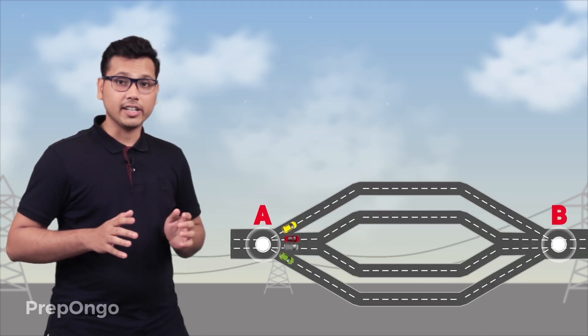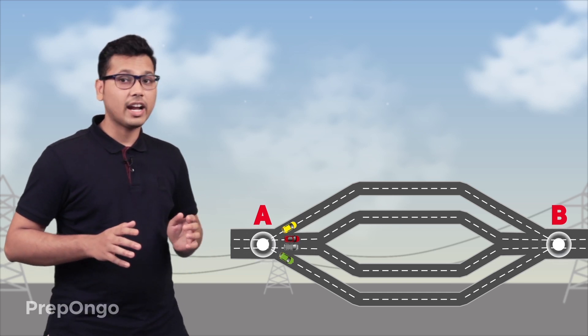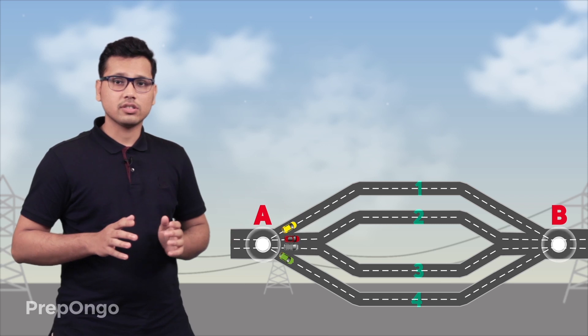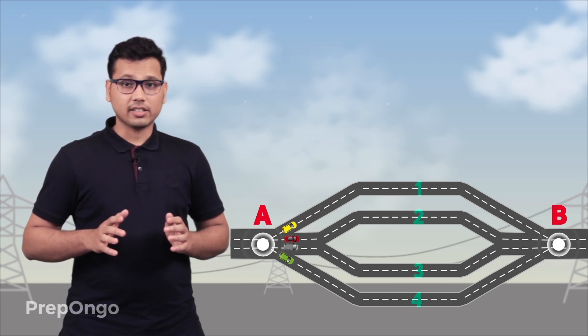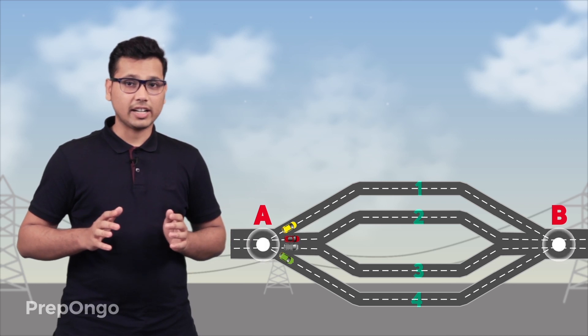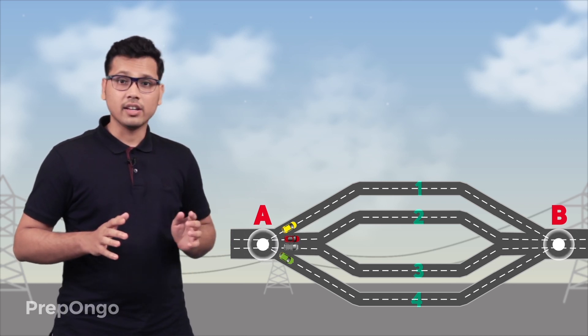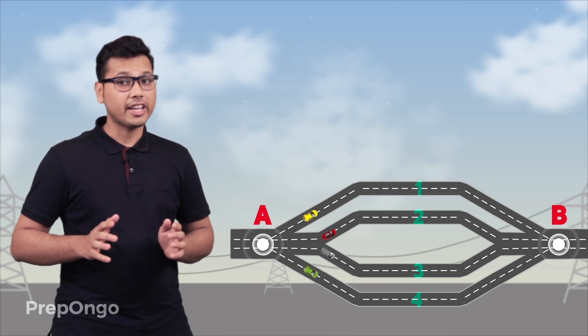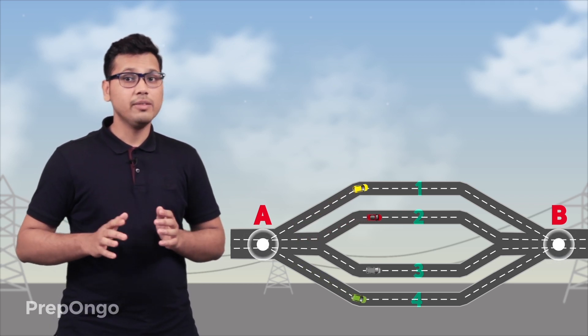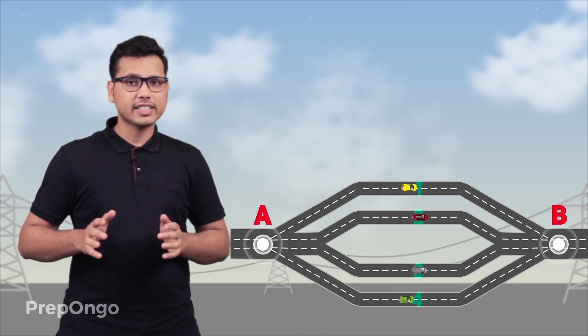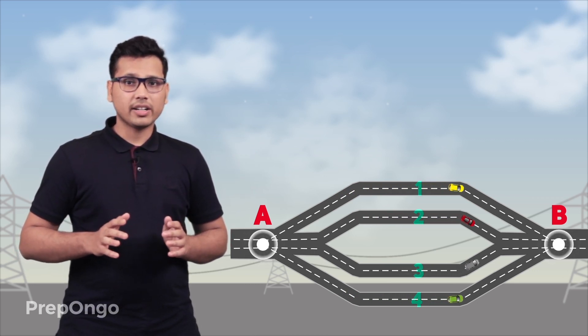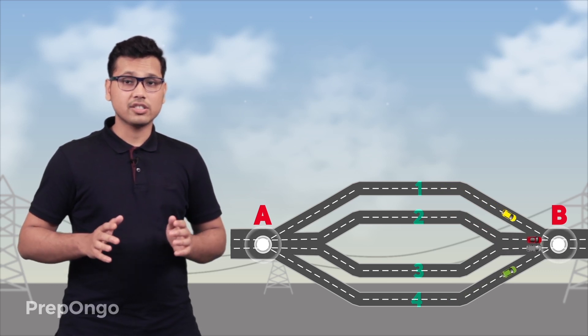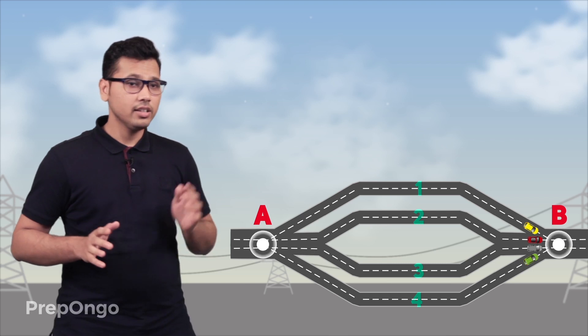Now let's consider another case where the roads are not connected in serial fashion. Instead, the ends of all the roads are connected between city A and city B — connected in parallel fashion. In this case, all four of you may end up taking different roads and finally meet at city B. Some may reach earlier and some later, but ultimately everyone reaches city B.